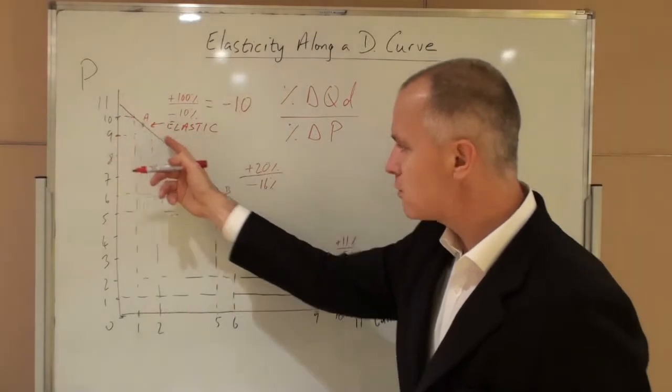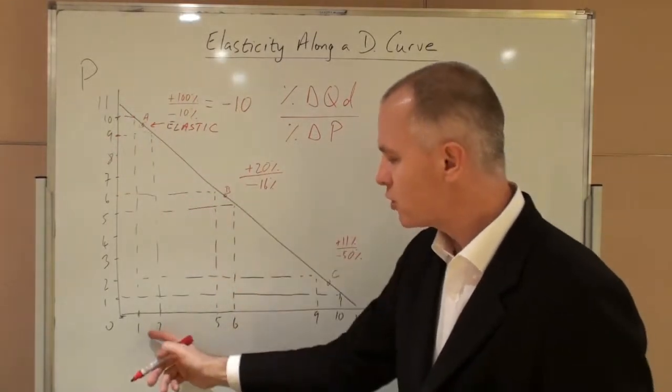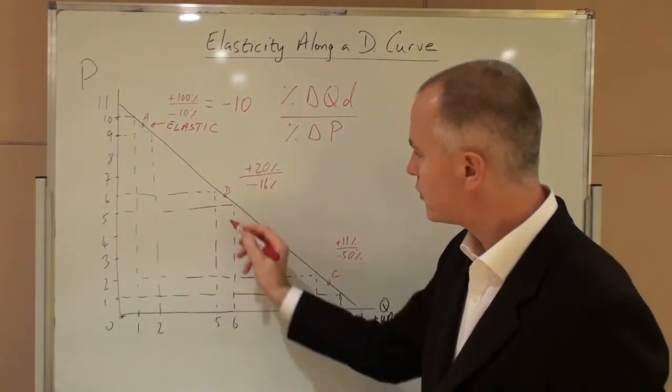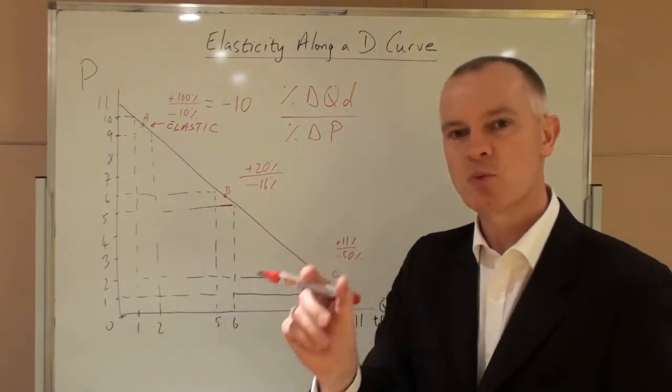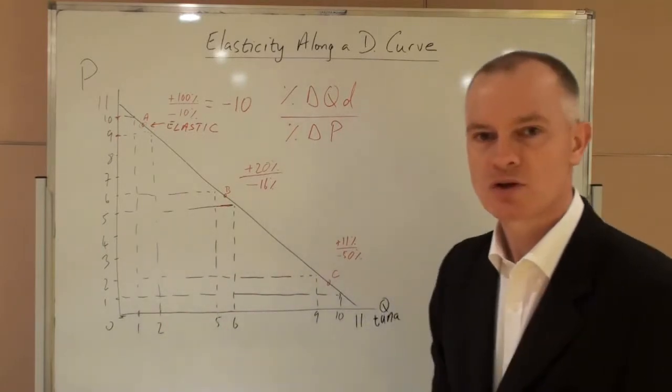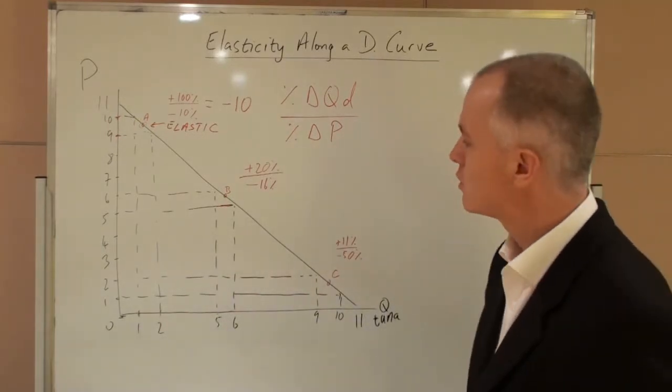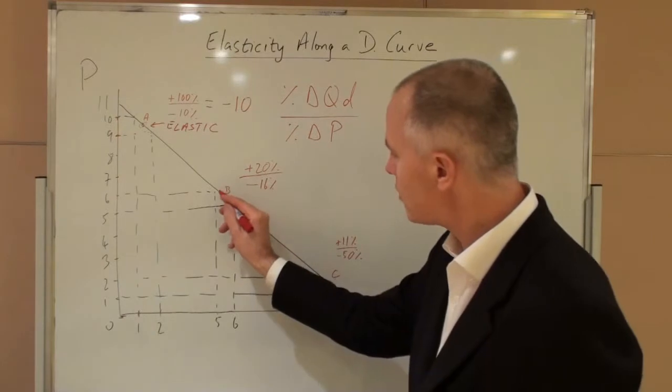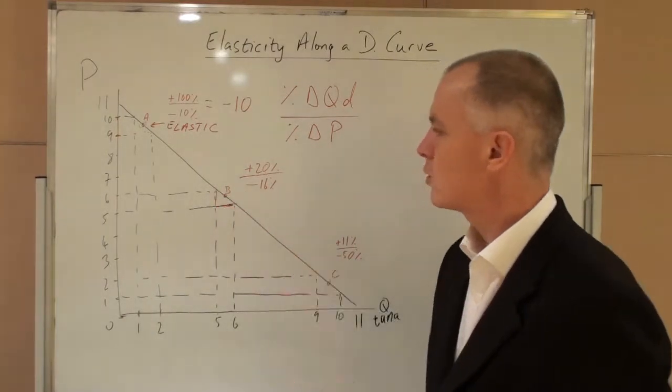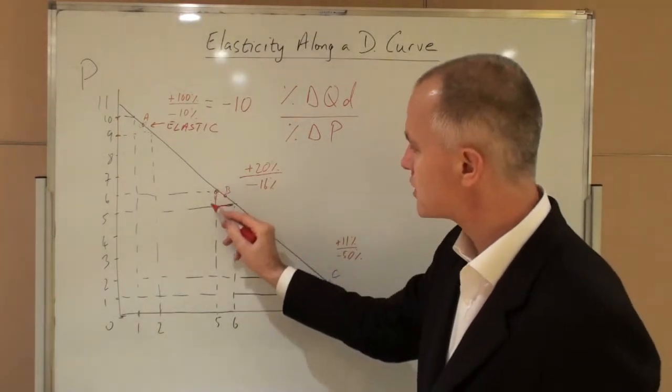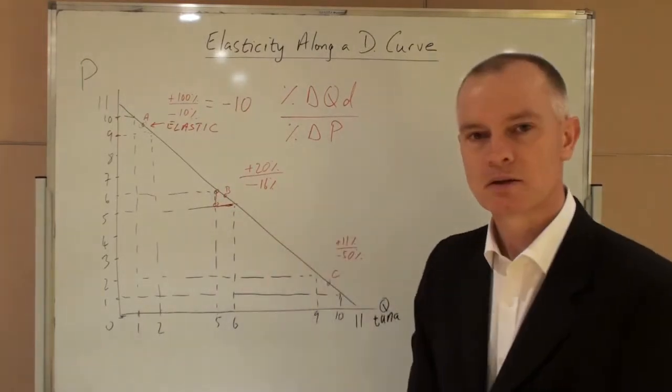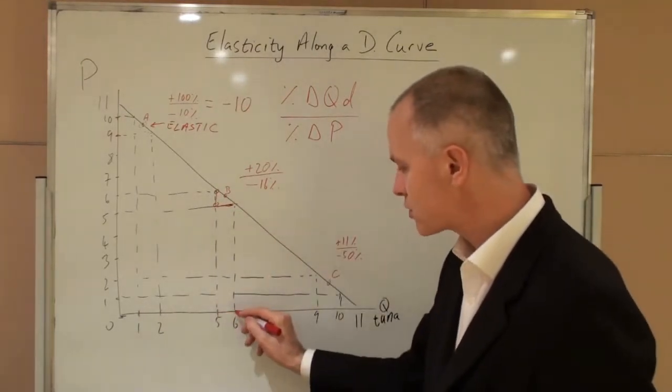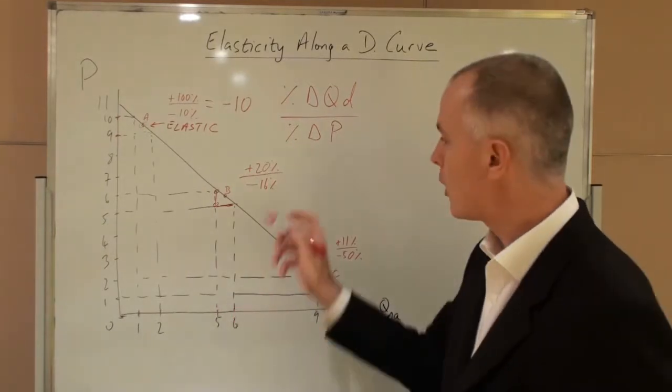As we move down the curve, then the quantity values increase and thus an absolute change of one unit will be a much smaller percentage compared to when we start with a very small number of Tuna demanded. In the very middle of this demand curve, we see that a price change from six to five is sixteen percent. And this causes a demand increase from five to six of twenty percent.